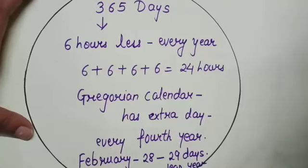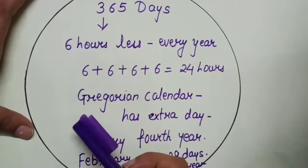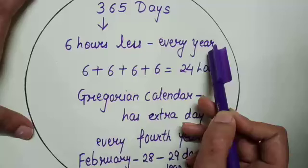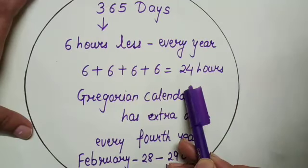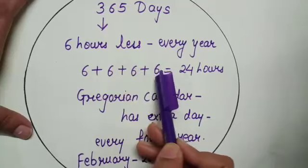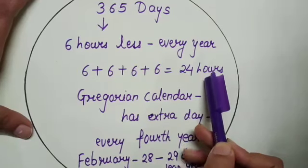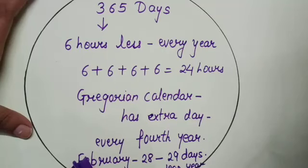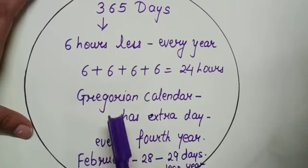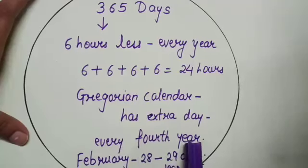In the Gregorian calendar, the year is taken to have 365 days. This means it counts 6 hours less every year. That makes 24 hours, or a day — 6 plus 6 plus 6 plus 6 equals 24 hours, or one day every 4 years. To make up for this lost one day, the month of February in the Gregorian calendar is given 1 extra day, and that is why it is called a leap year.